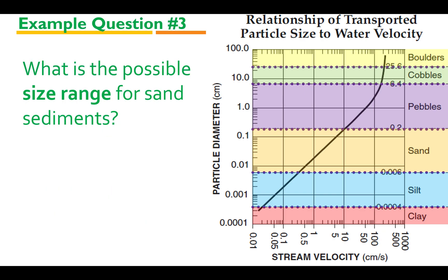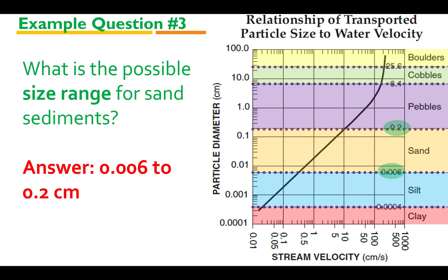Here's another type of question: what is the possible size range for sand sediments? Remember, the dashed lines represent the difference in sizes for your sediments. To find the size range for sand, look at the dashed lines on either side of the sand section. The range for sand sediments is 0.006 to 0.2 centimeters.